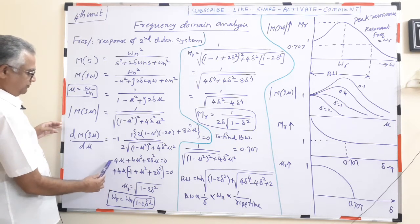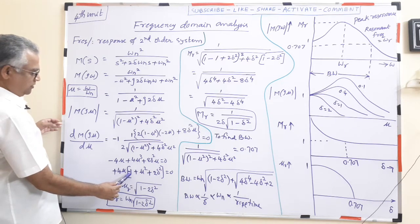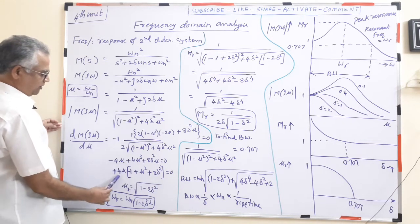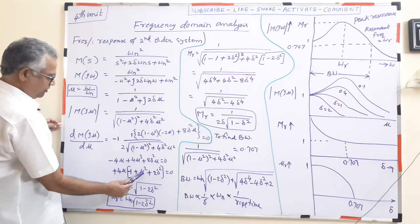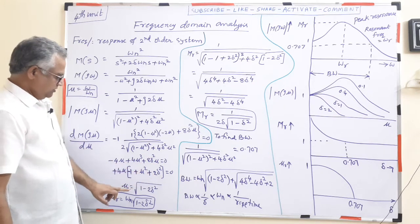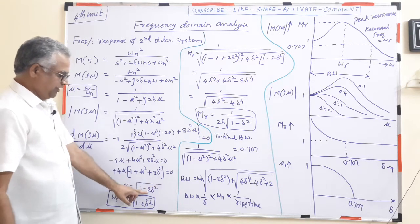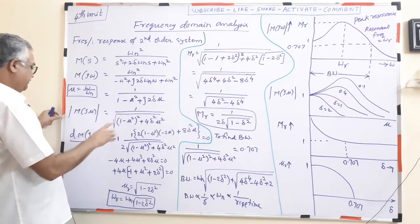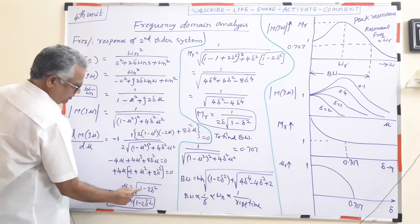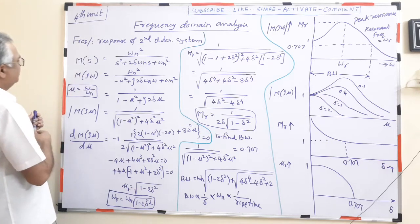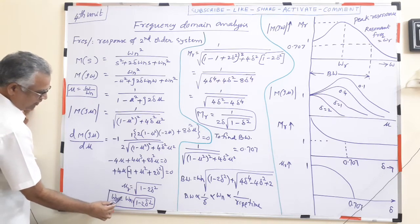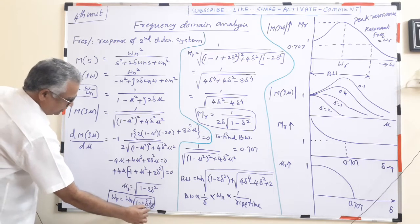Taking 4μ common: 4μ(−1 + μ² + 2δ²) = 0. Solving for μ gives μ² = 1 − 2δ². Therefore, μr = √(1 − 2δ²). Since μr = ωr/ωn, the resonant frequency is ωr = ωn·√(1 − 2δ²). This is the frequency at which the magnitude is maximum.